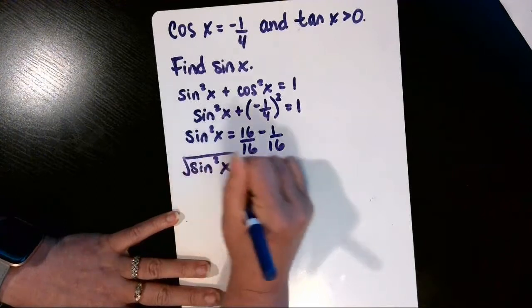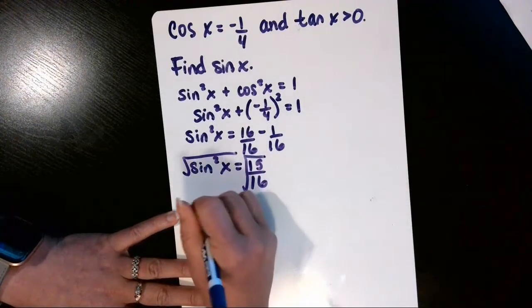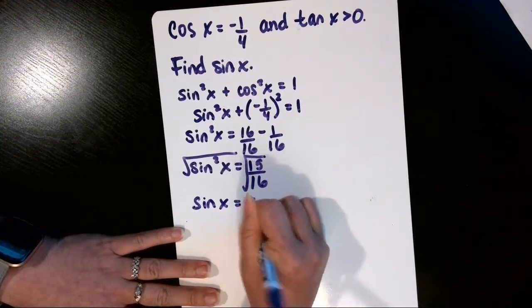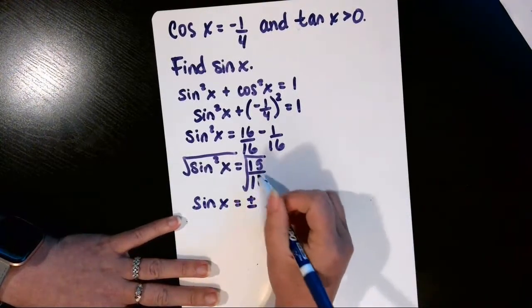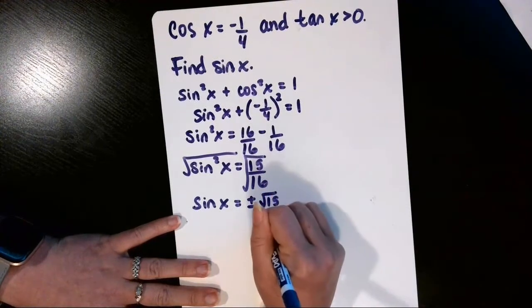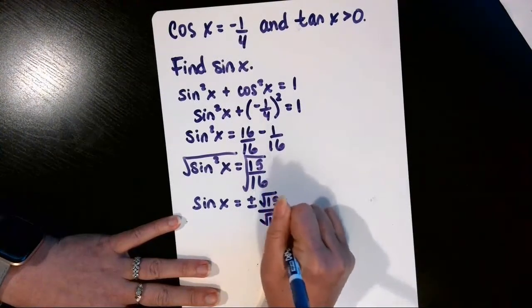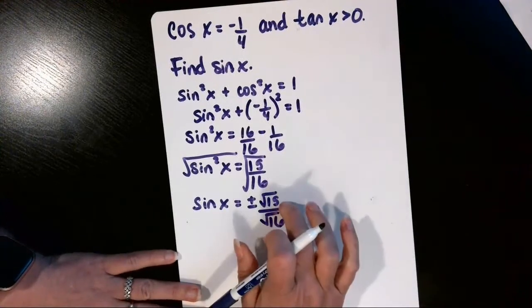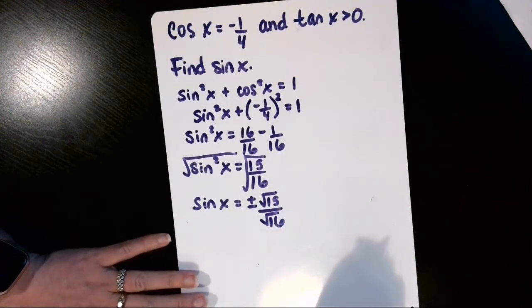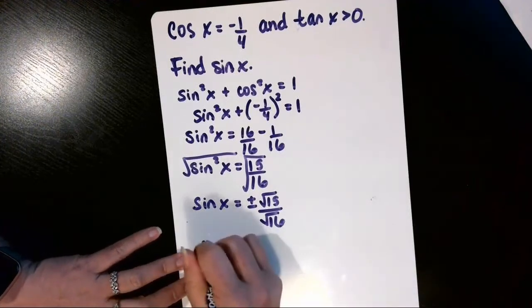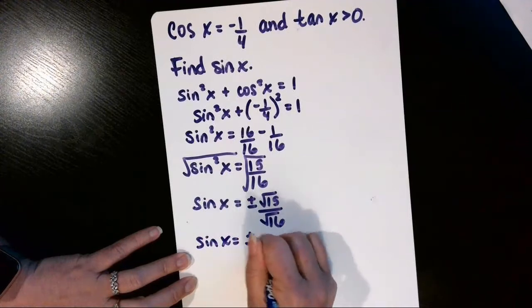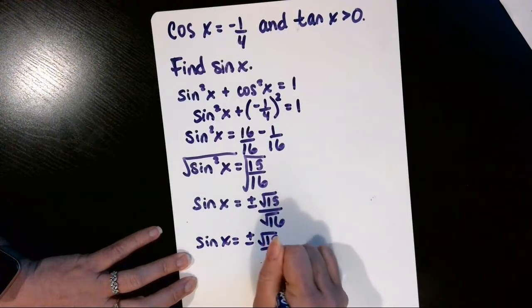And now we're going to square root both sides, and the sine of X is equal to plus or minus, and then we take the square root of the top and square root of the bottom. So square root of 15 divided by the square root of 16. 15 is 5 times 3, that won't reduce, but the square root of 16 does reduce. So we'll have sine of X is equal to plus or minus square root of 15 over 4.